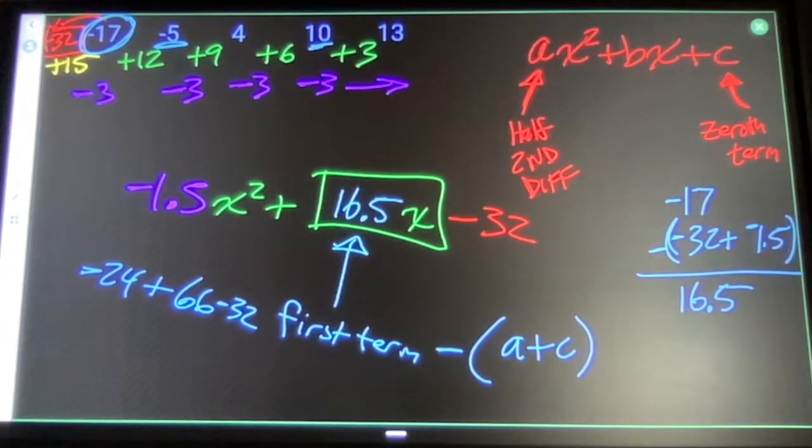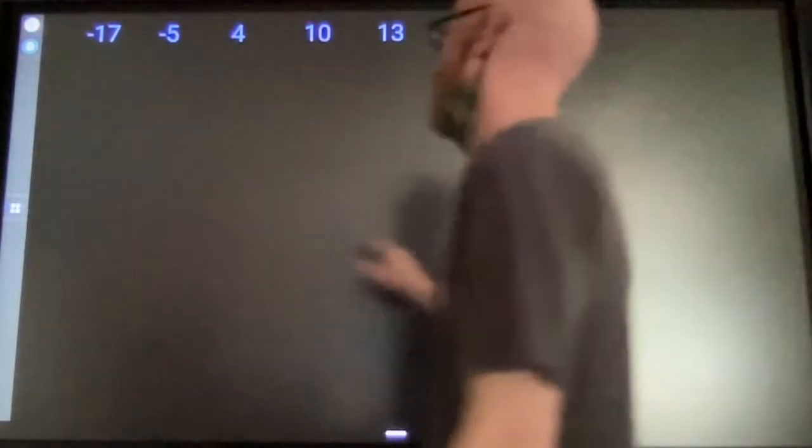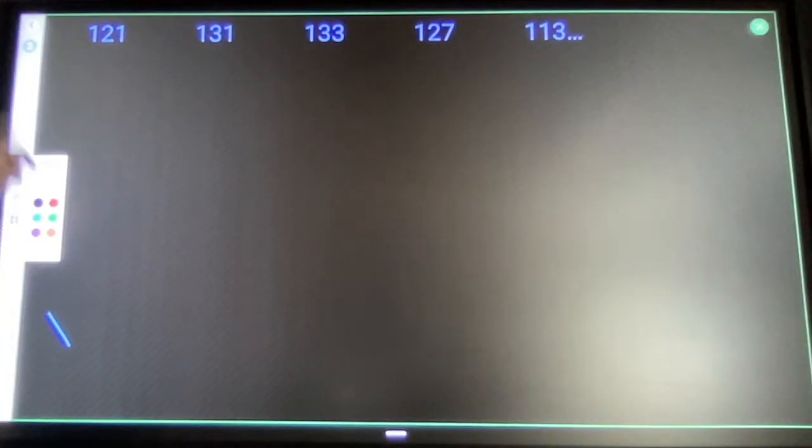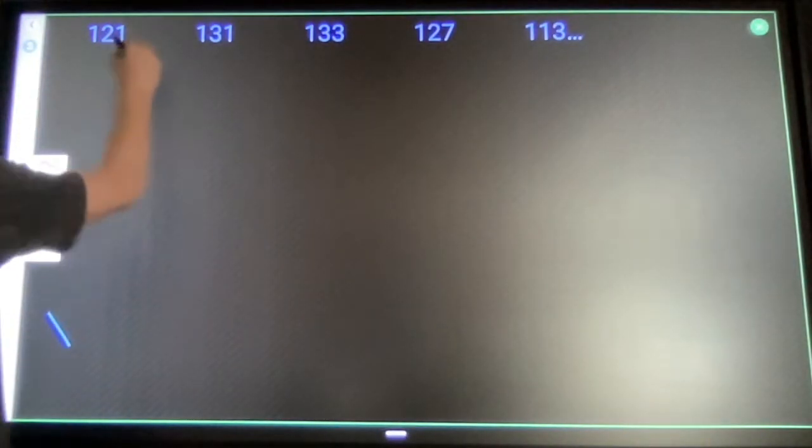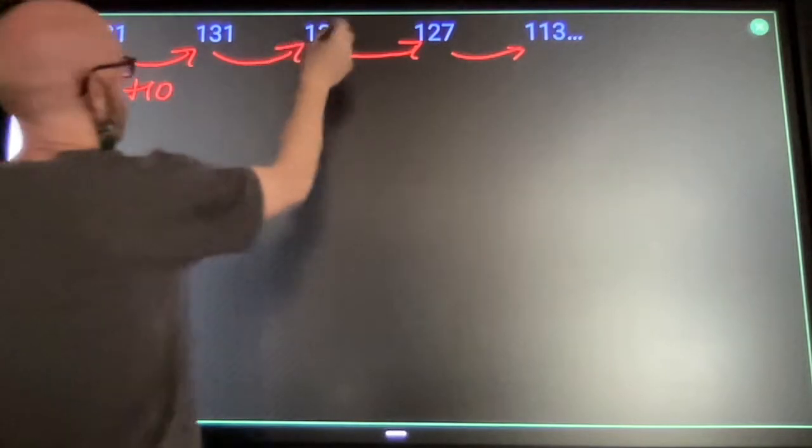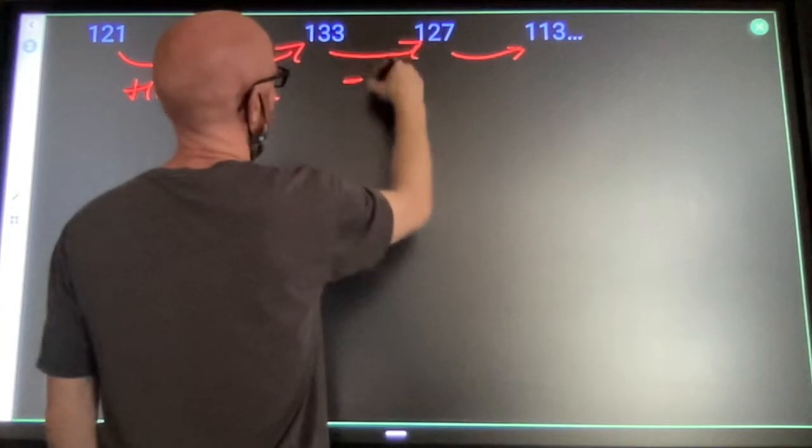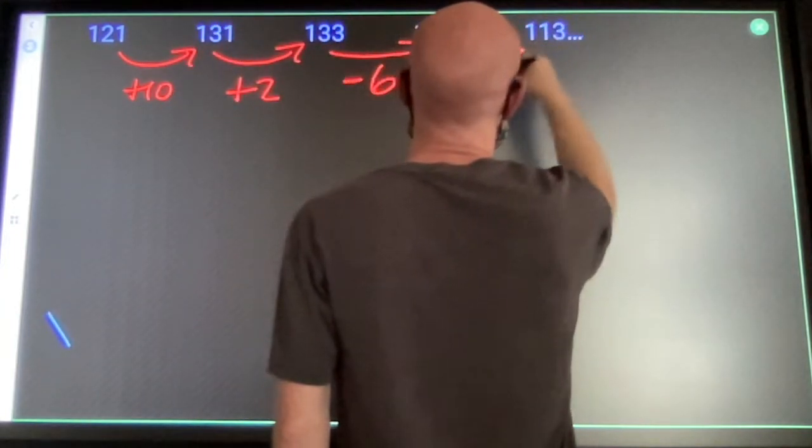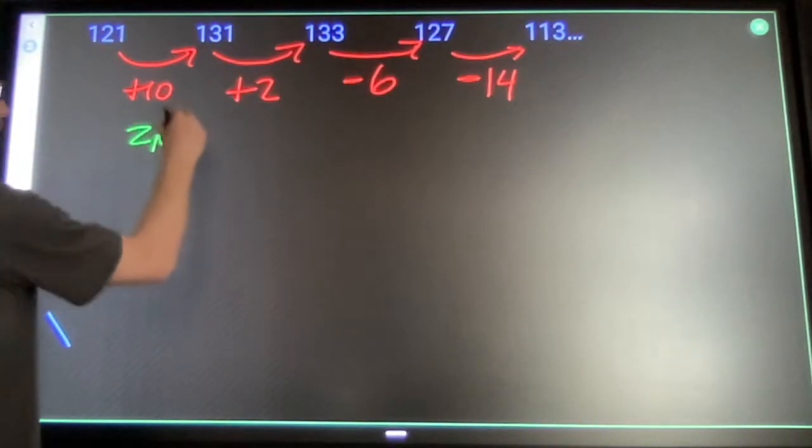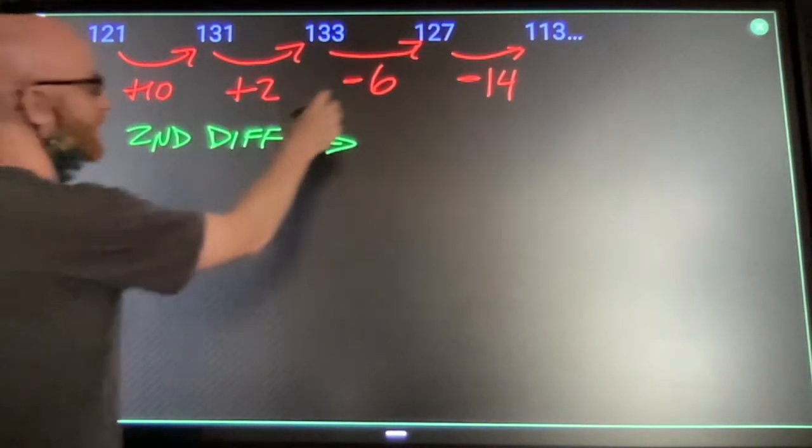Now I'm going to show that again, start to finish, with less explanation. So I want to write a formula for this. Find my distances: plus 10, plus 2, minus 6, minus 14. Second differences are going down 8, down 8, down 8.